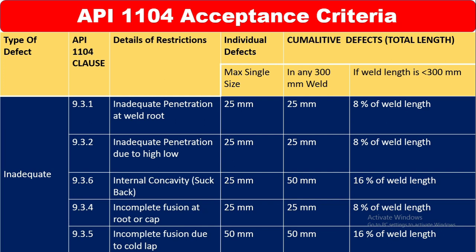Clause 9.3.4 is incomplete fusion at root or cap. If you see any incomplete fusion at root or cap, it is not acceptable. Clause 9.3.5 covers incomplete fusion due to cold lap. For cold lap, the maximum single size is 50 mm, and in any 300 mm weld that is 50 mm. If weld length is less than 300 mm, it is 16% of the weld length.